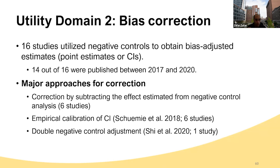The second domain was bias correction, and we found 16 studies that used negative control for bias correction, 14 of which were published between 2017 and 2020. We identified three main approaches for bias correction: the first was the difference-in-differences, or simple subtraction; the second was empirical calibration of confidence intervals by Schuemie et al., 2018; and the third was the double negative control adjustment by Shi et al., 2020.